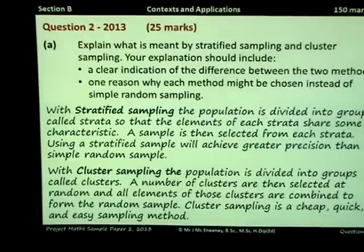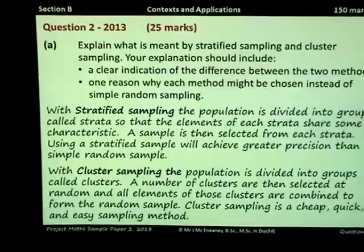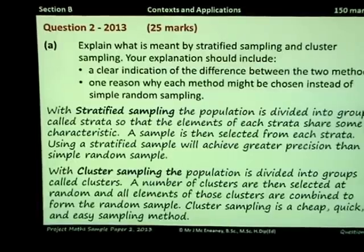With cluster sampling, the population is divided into groups called clusters. Then a number of these clusters are selected at random, and all elements of those clusters are combined to form the random sample. Cluster sampling is a cheap, quick and easy sampling method. That would be its advantage over simple random sampling.